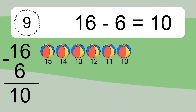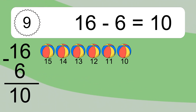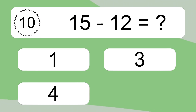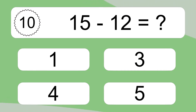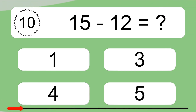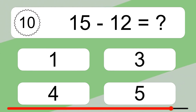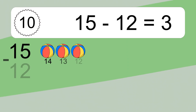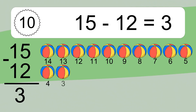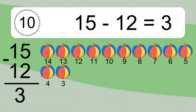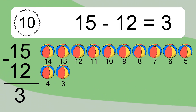13, 12, 11, 10. 15 minus 12 equals what? 15 minus 12 equals 3. Let's count it: 14, 13, 12, 11, 10, 9, 8, 7, 6, 5, 4, 3.